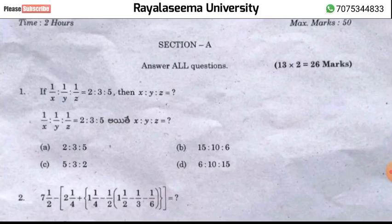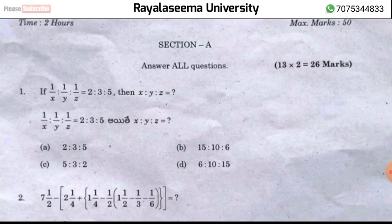Given x:y:z = 5, the reciprocal gives x:y:z equal to 15:10:6. So option B is the correct answer for the first question.